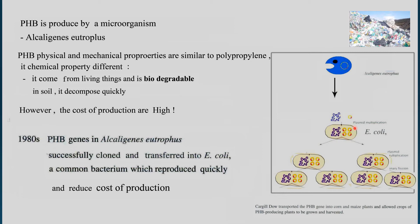E. coli grows very quickly and reproduces in a matter of an hour. And if you transfer the plastic-producing genes, the descendants will all be producing plastic.